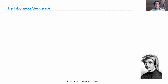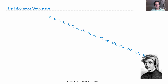Here's Fibonacci. He was a middle-ages Italian mathematician who really liked this sequence of numbers, which is defined as 0 and then 1. And then the next number is always the sum of the current number and its predecessor. Fibonacci did not invent the sequence, but he made it popular in Europe.